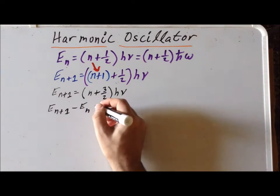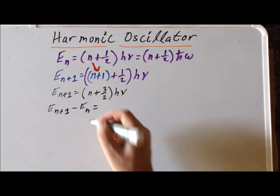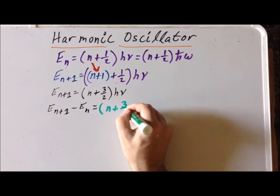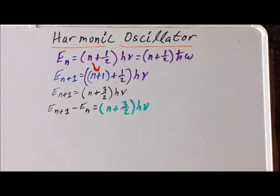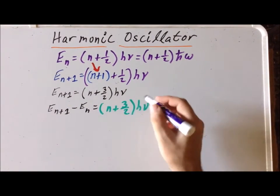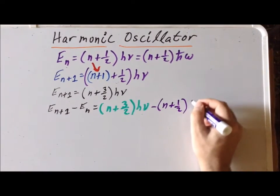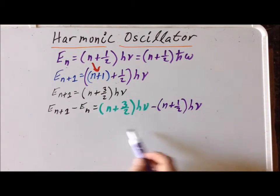First we write down the e sub nth plus one energy expression. Let's write that out in green. That's n plus three halves times h nu. Now we're going to write the expression for the nth value, and we're going to write that in blue. That is going to be n plus half times h nu. So this is e sub n plus one, this is e sub n, and notice that we're subtracting them.